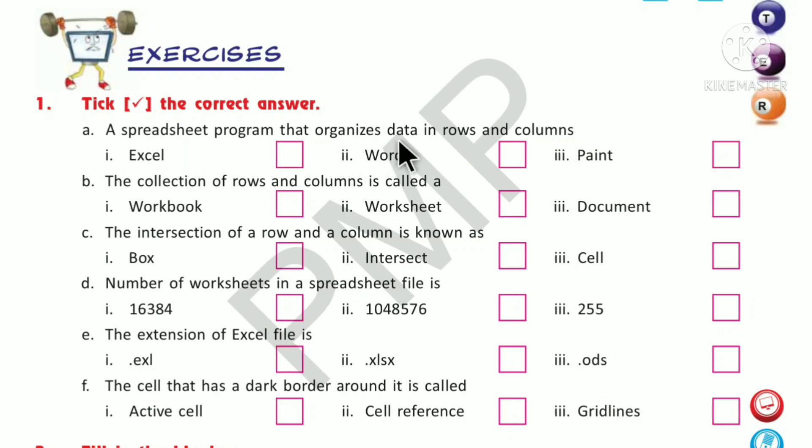Question B: The collection of rows and columns is called a workbook, worksheet, or document? It is called worksheet. Tick here. Question C: The intersection of a row and a column is known as box, intersect, or cell? It is cell.